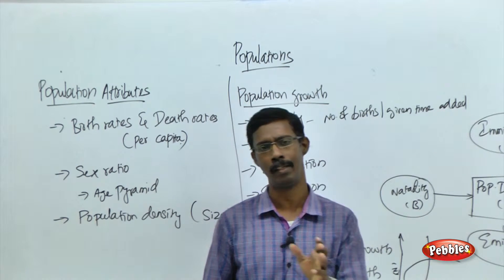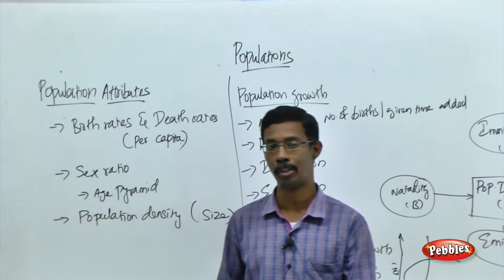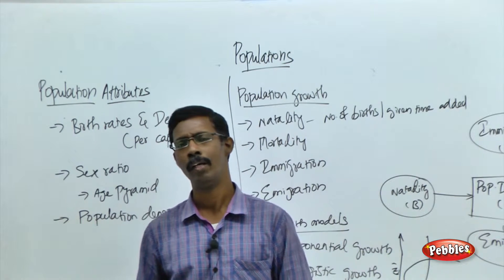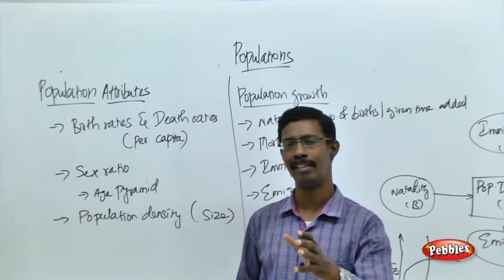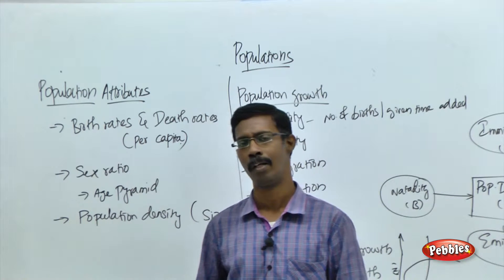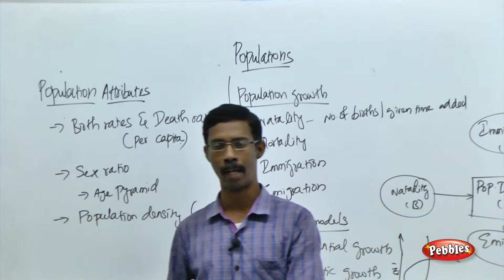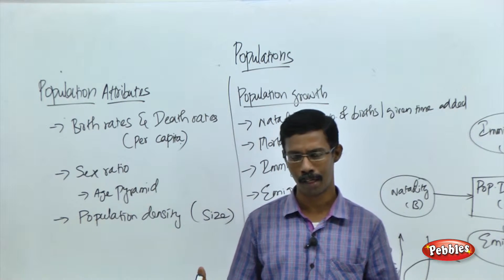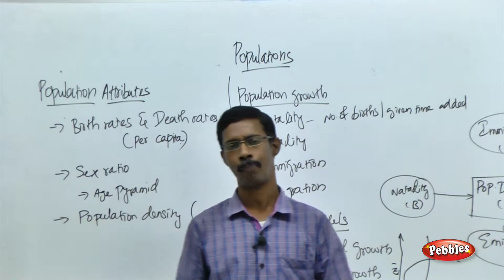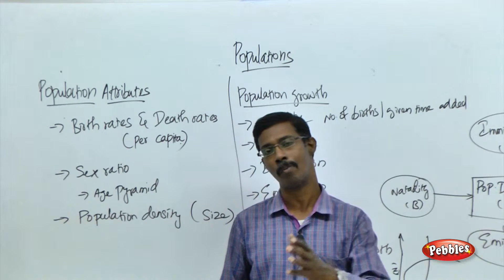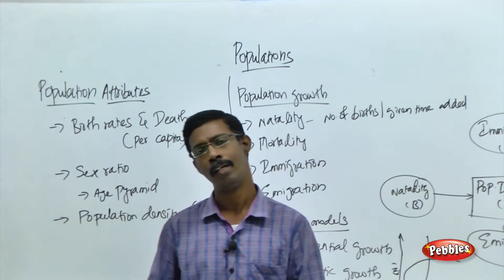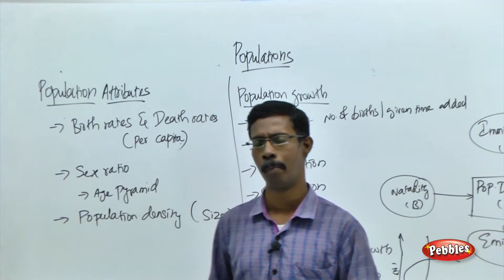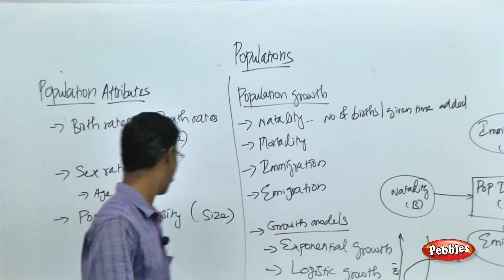We cannot say birth and death because this is not talking about an individual or a single person — this is talking about a collective group. So we have to use the term birth rate and death rate. Both we have to use the term per capita: birth rate per capita and death rate per capita. That means, in a particular area during a particular given time, how many births have happened or how many deaths have happened.